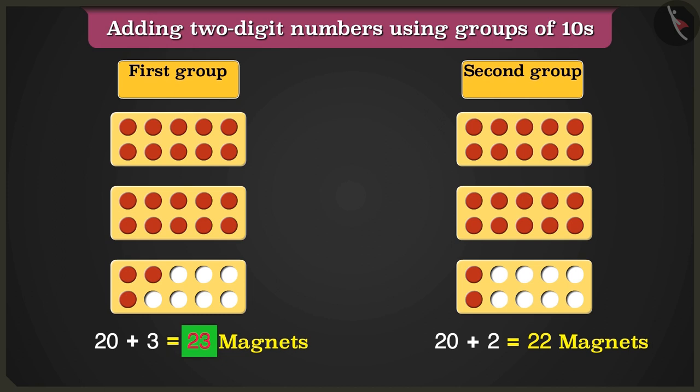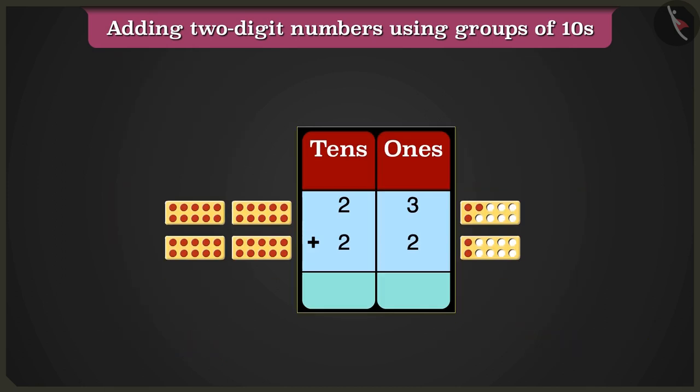Now to add the numbers 23 and 22, we have to write them in the table of 10s and 1s. In the box of 1s, we will add the numbers 3 and 2.